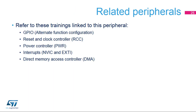This is a list of peripherals related to the USART. Please refer to these trainings for more information if needed: General Purpose Input Outputs, Reset and Clock Controller, Power Controller, Interrupts Controller, and Direct Memory Access Controller.